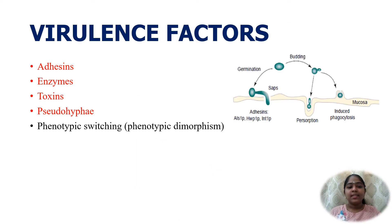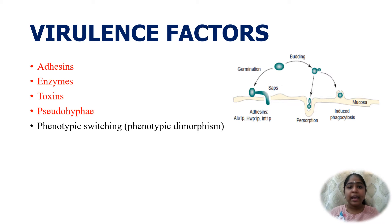Virulence factors that contribute to the pathogenesis include adhesins that help in adhesion to the skin and mucosa, and enzymes such as aspartyl proteinases and serine proteinases that help in tissue invasion. Toxins — the glycoprotein extracts of the Candida cell wall — are pyrogenic, similar to bacterial endotoxin.